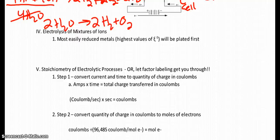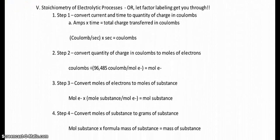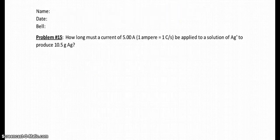Alright, electrolysis of mixtures of ions. Hopefully you see the most easily reduced metals, the highest values of the E cell, will be plated out first. So if you have a mixture of stuff, the one that's easiest will plate out. Hopefully that makes sense to you. Now the stoichiometry, the electrolytic process, there are these different steps. But I always thought that factor labeling made a lot more sense than keeping and memorizing these four steps. But basically what you need to do is convert current and time to the quantity of charge in coulombs, convert the quantity of coulombs to moles of electrons, convert moles of electrons to moles of substance, and then convert moles of substance to grams of substance. That's fairly, in my book, kind of cumbersome to keep that all memorized. Instead, I do this: let your factor labeling get you through.